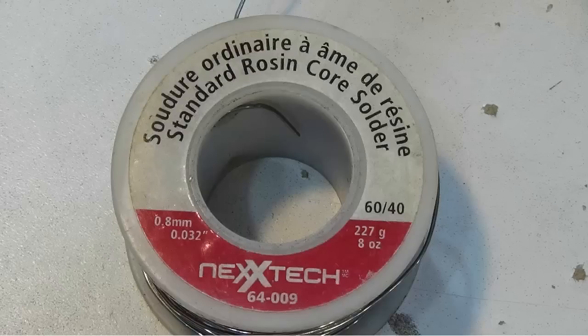Acid core solder is used in the plumbing industry and I would recommend that you use a solder that has a diameter of either 0.8 millimeters or 0.032 inches.